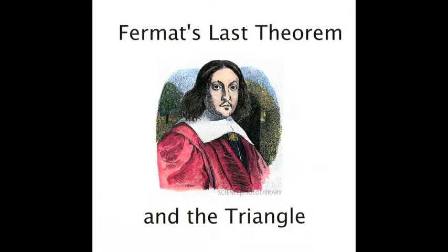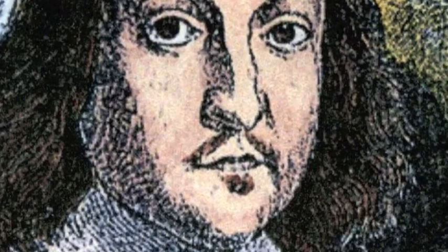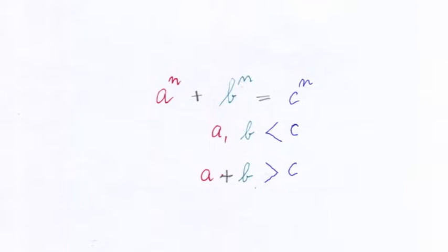Fermat's Last Theorem on the triangle. Fermat was a judge in France in the 17th century who loved numbers, and it seems he also loved triangles. The formula of his famous last theorem states that a to the power of n plus b to the power of n equals c to the power of n. The theorem says this formula cannot have a solution if a, b, c, and n are all integers and if n is larger than 2. It took over 300 years until the theorem was actually proven correct by two mathematicians, Wiles and Taylor, about 20 years ago.